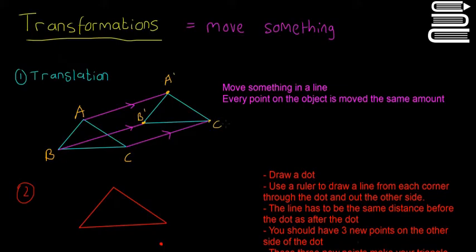So you get A dash, B dash, and C dash, and then you have your new triangle. That's basically just translating something — moving it by a certain amount. So all these lines have to be parallel; you just move every point the same amount. If they ask you to translate something, get a ruler — say this is 4 — then you have to move A by 4, move B by 4, and move C by 4, all in the exact same direction.